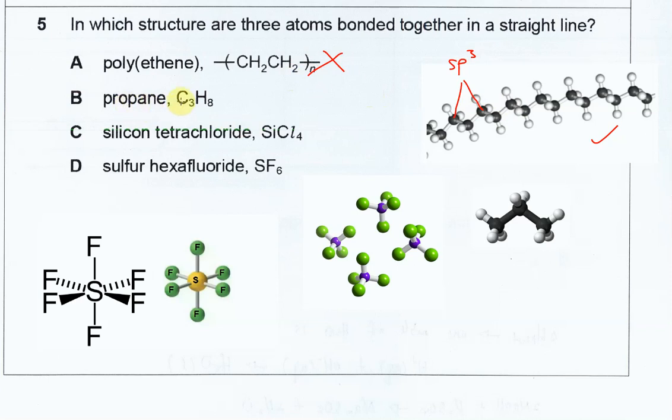Okay, propane. Propane is kind of similar with polyethylene, it's just that this one is one small molecule and this is a polymer chain. All this carbon also sp3 carbon and also this molecule it cannot have three atoms in a straight line.